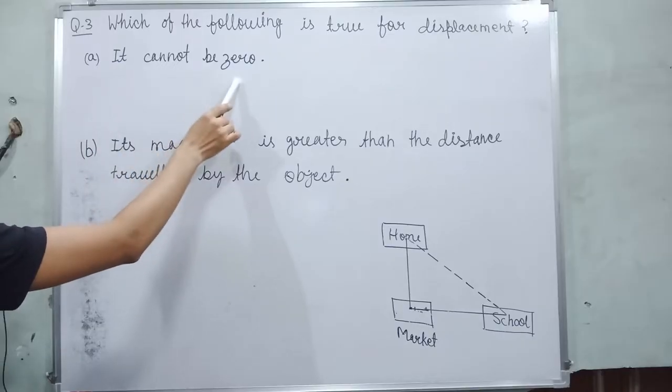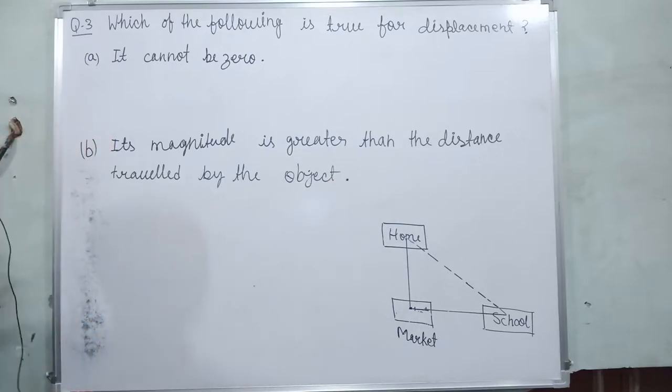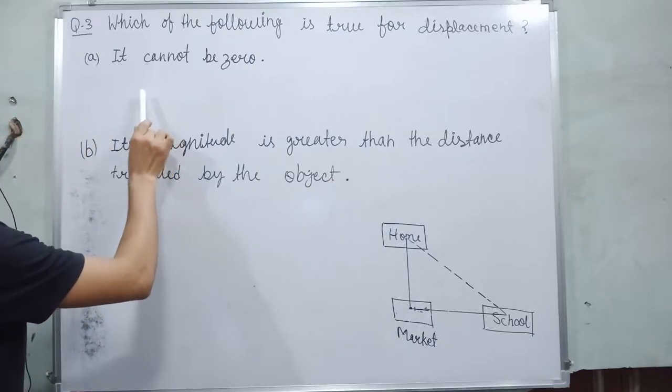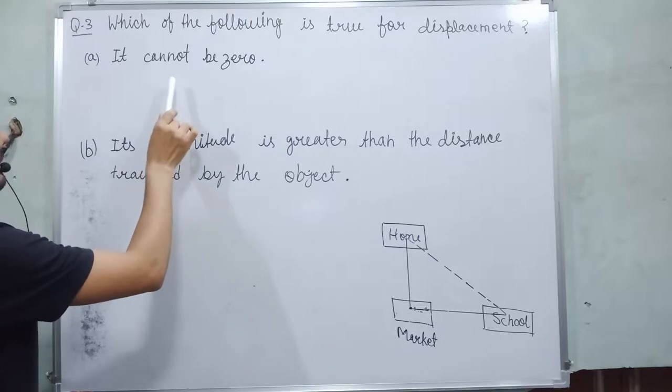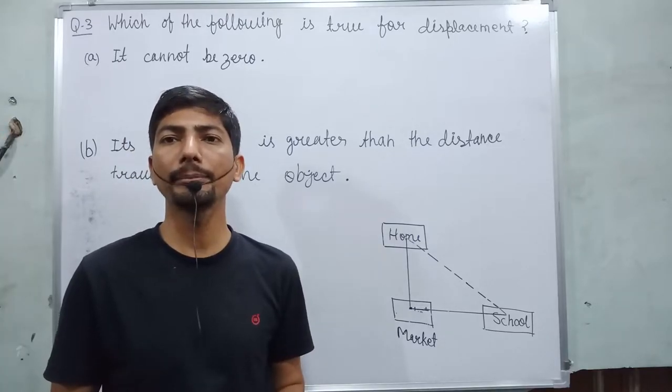Which of the following is true for displacement? Option A, it cannot be 0. B, its magnitude is greater than the distance travelled by the object. So in these questions, we need to find out that it is true or false. Both options are false. So let's start.